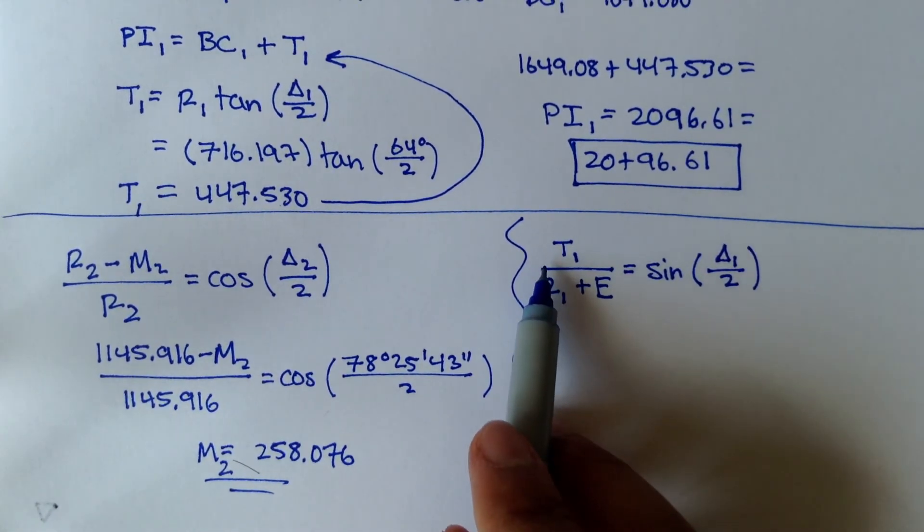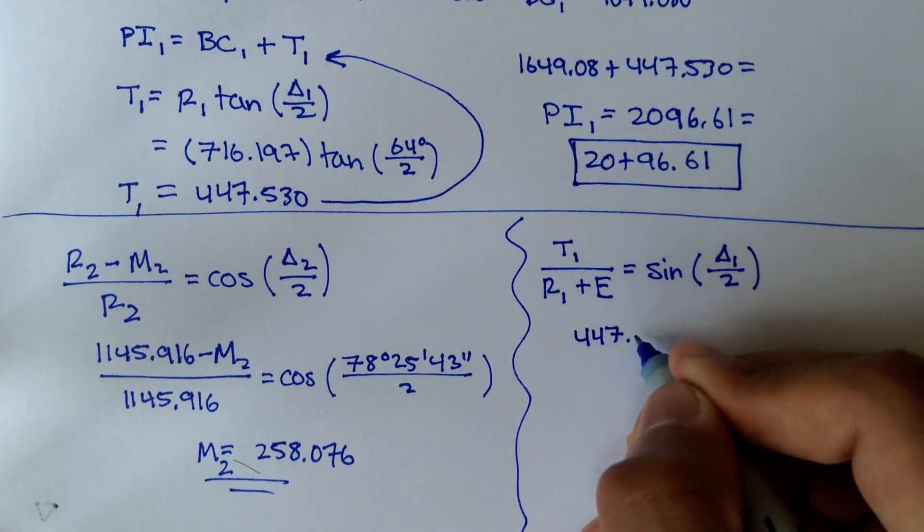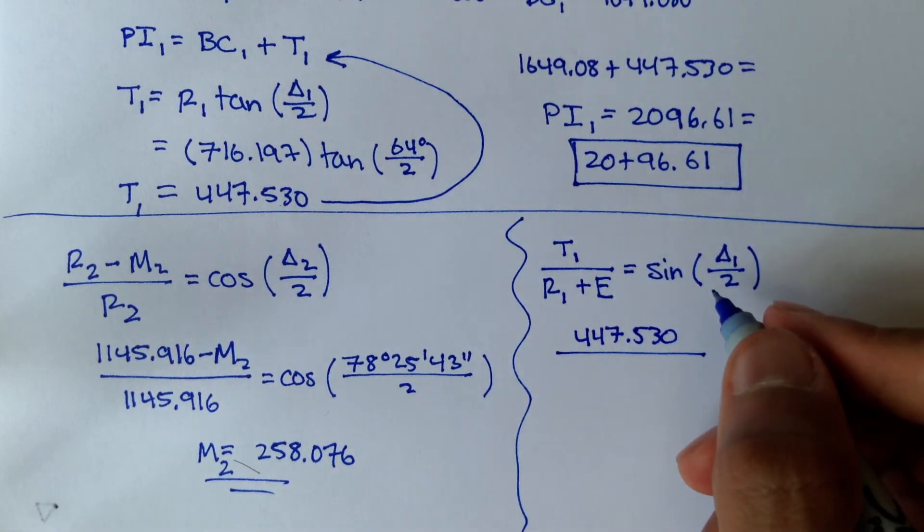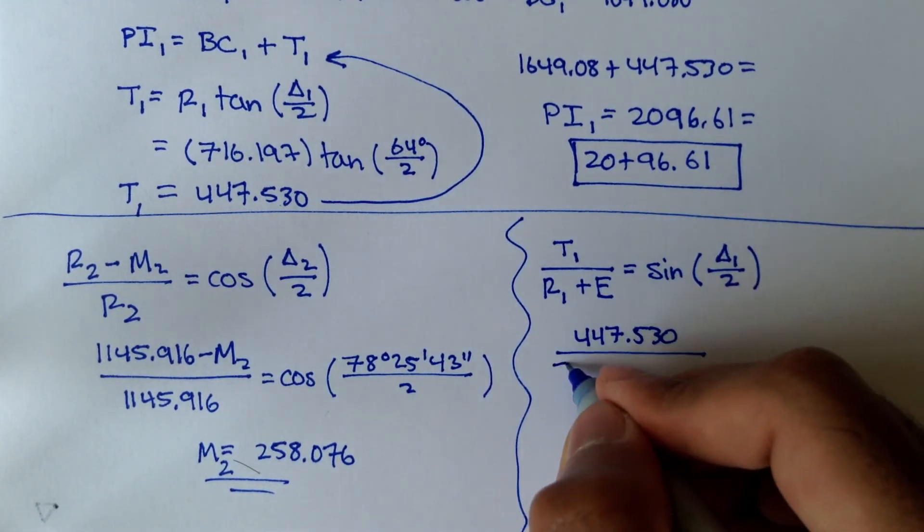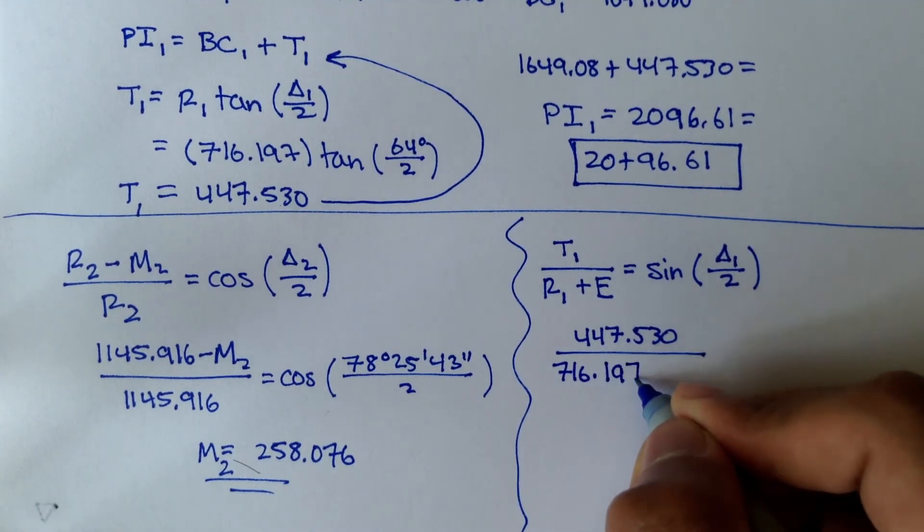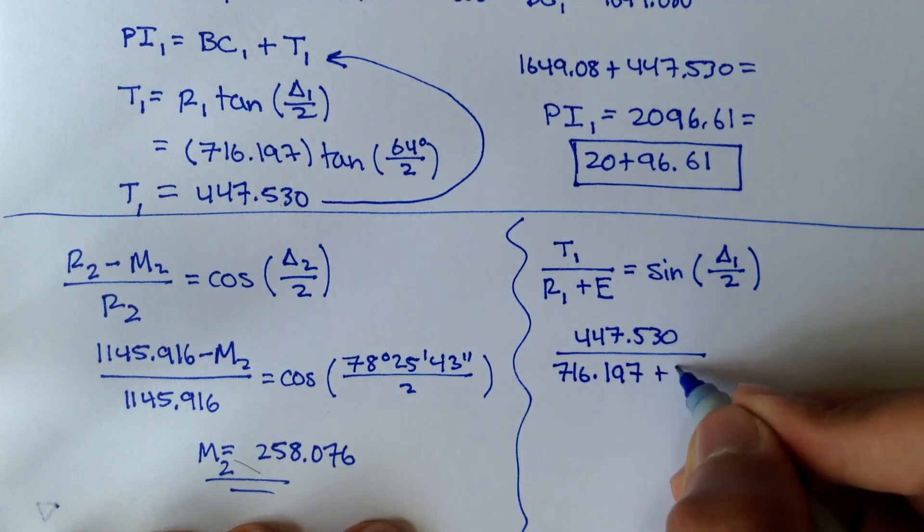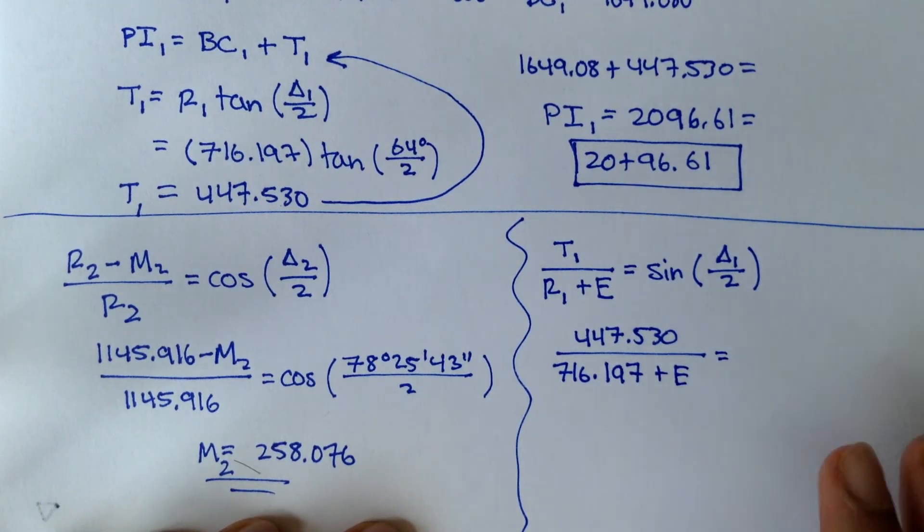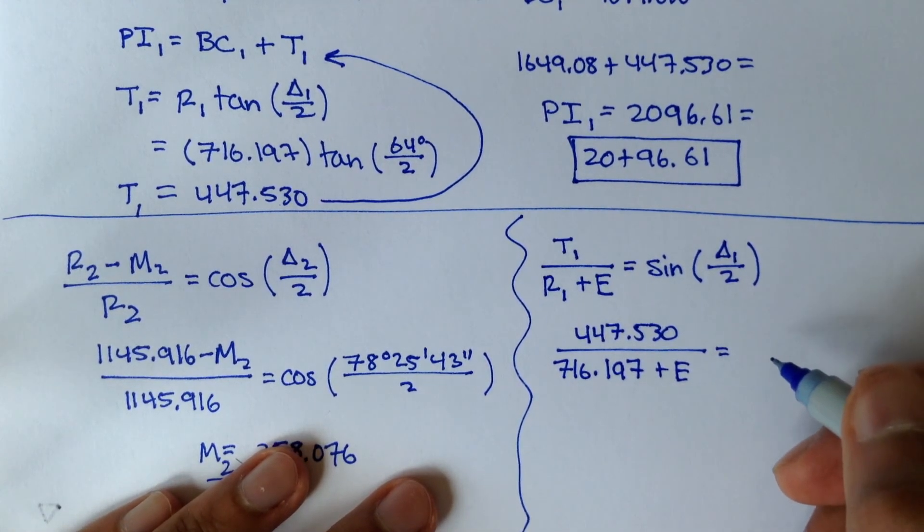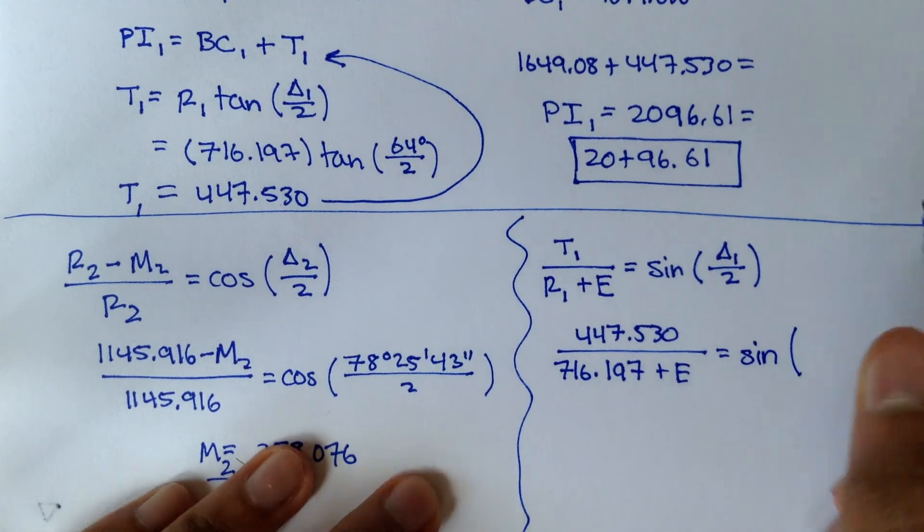over radius plus the external distance E is equal to sine of delta 1 over 2. We figured out what T1 was. It was, it was here, 447.530 over radius 1, and radius 1 was 716.197. Remember, that was given in the problem,